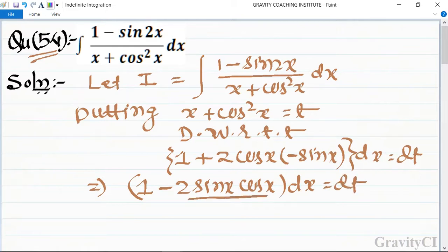Using the formula 2sinxcosx = sin2x, we have (1 - sin2x)dx = dt.